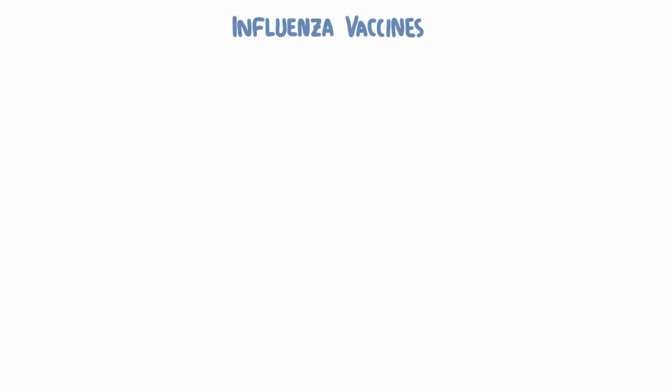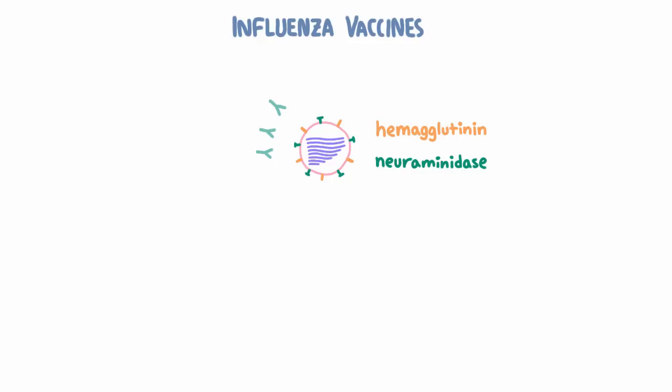Before talking about the vaccines themselves and how they're made, let's talk about how our immune system responds to influenza so that we know what the vaccines are trying to stimulate. One of our primary immune defenses against influenza is neutralization of the virus with antibodies. These antibodies target hemagglutinin and neuraminidase, the main exposed proteins in the virus. Hemagglutinin antibodies are the most important — they prevent viral entry into our cells because hemagglutinin is what binds to the sialic acid on our cells.